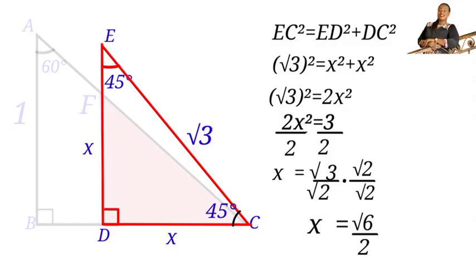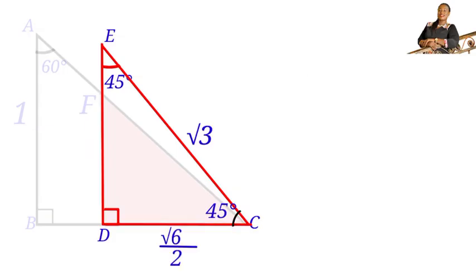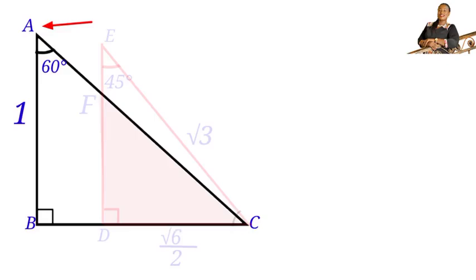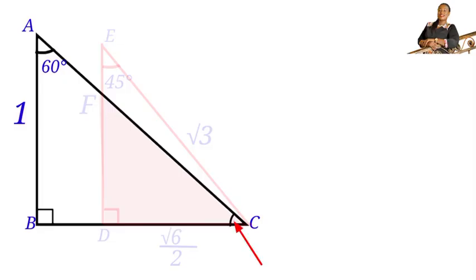So DC, the leg of triangle EDC, equals √6/2. Next, focusing on triangle ABC: the right angle is 90 degrees and angle BAC is 60 degrees, so the remaining angle is 30 degrees, since 90 + 60 + 30 = 180, which is the sum of angles in a triangle.